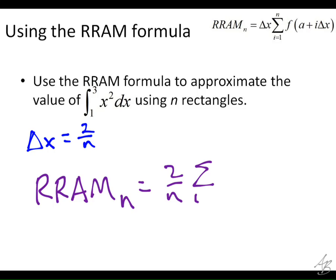We have 1 plus 2i over n squared. And this is just a general formula that says, okay, we can plug anything in for n, and it'll give us an approximation of this.